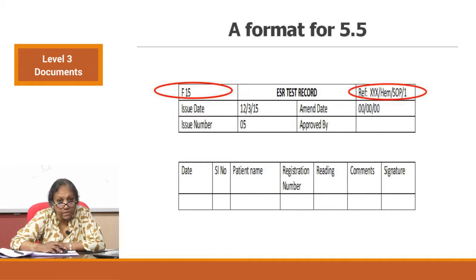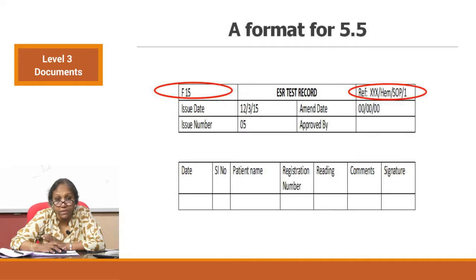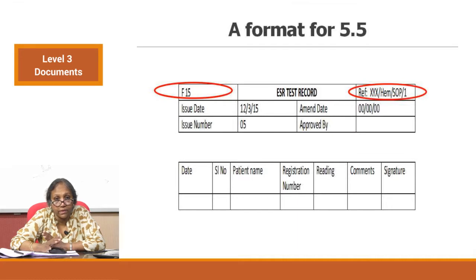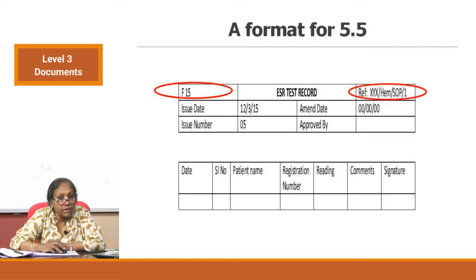For automated assays, printouts serve as records and you keep those. You can make a table listing what you will document. In this example it is a haematology department. For the manual assay format, the ESR test record captures: date, serial number, patient's name, registration number, reading, comments, and signature — that is all. You do not need to complicate it with unnecessary things; the minimum requirement for that activity. This kind of register is in most laboratories for recording patient results. The only additional thing now is to add a document control element.